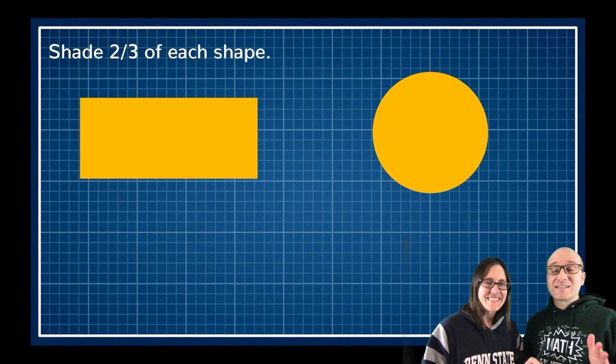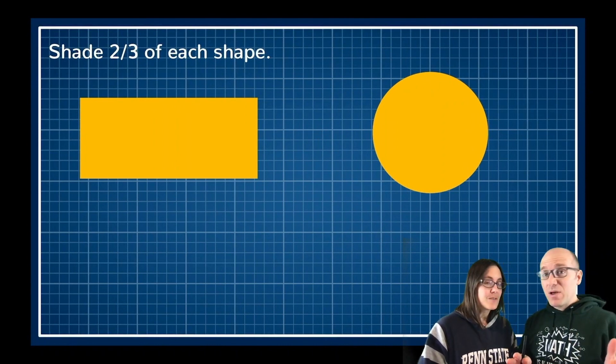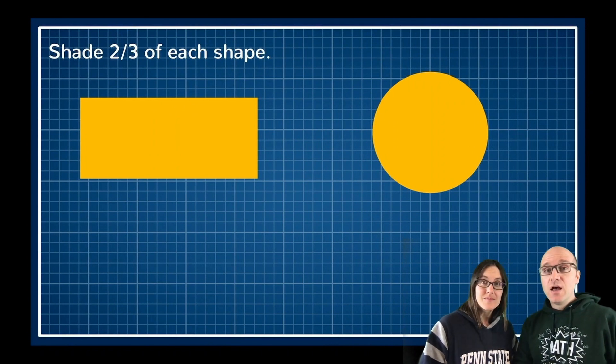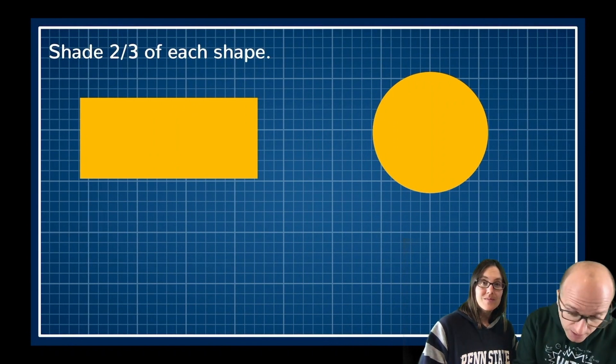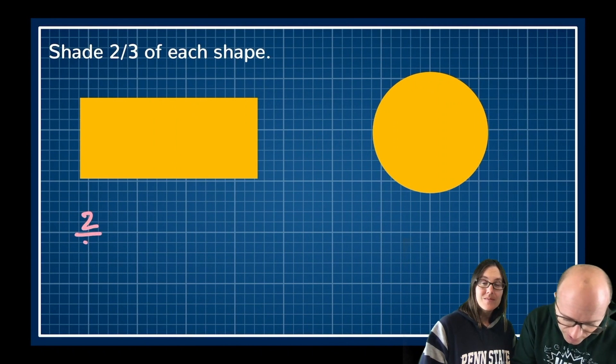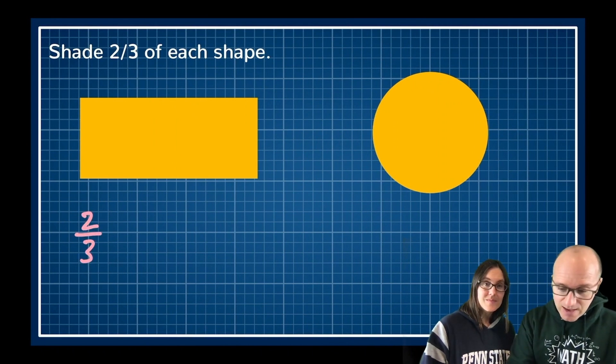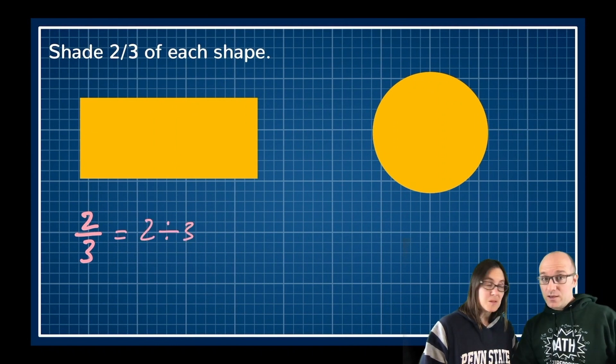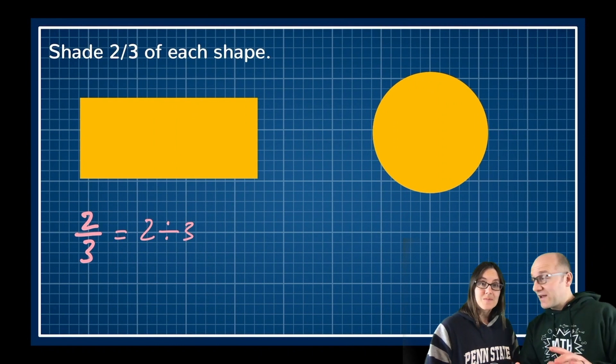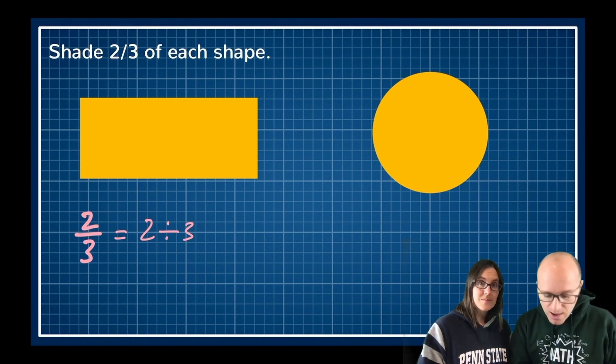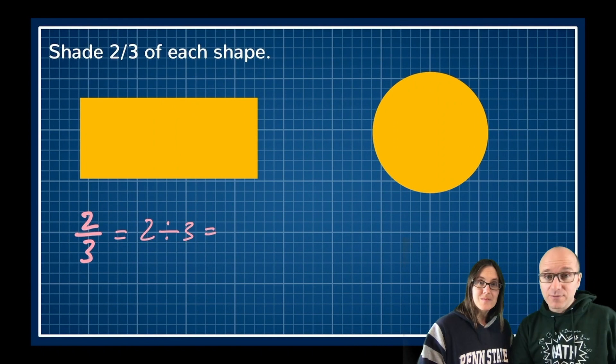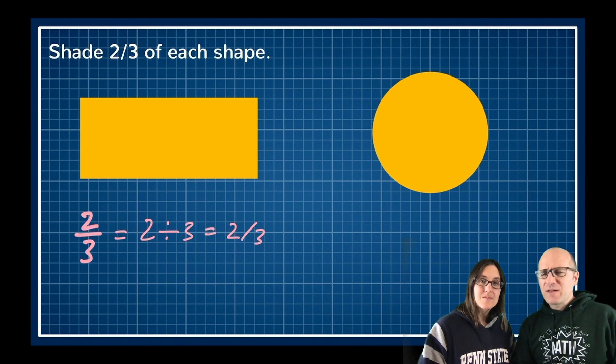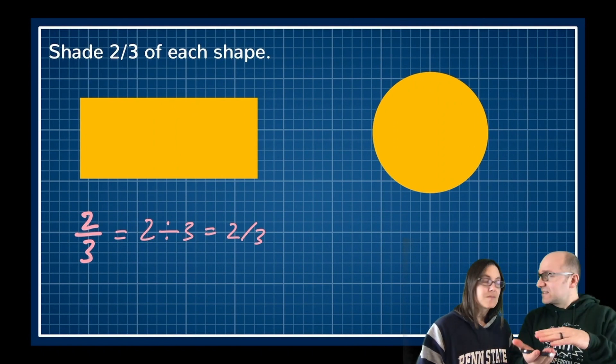Okay our first problem asks us to shade two-thirds of each shape but what does that even mean? Let's remind ourselves what is a fraction. When we write 2/3 that is the same as saying two divided by three. Or sometimes we would actually write that with the slash there like I've done in the question and that means the same thing, it just allows us to do it in less space.